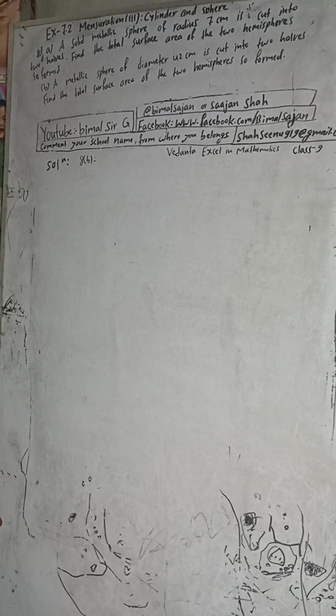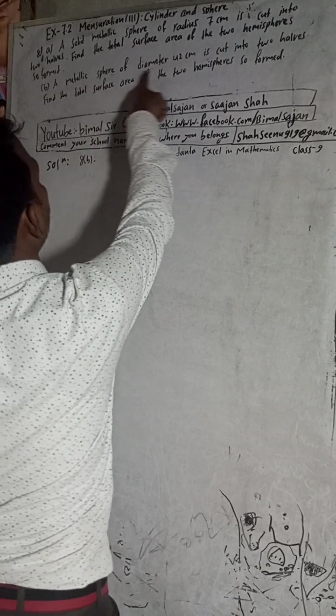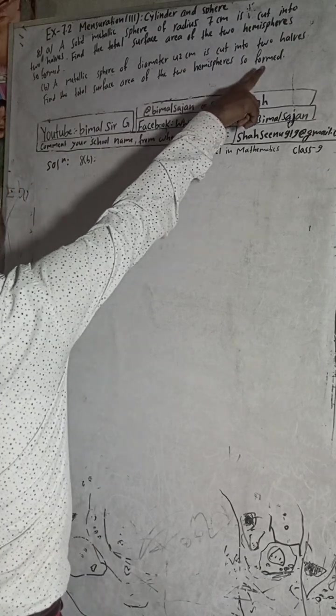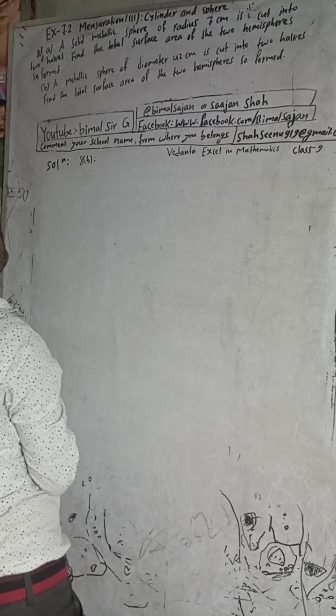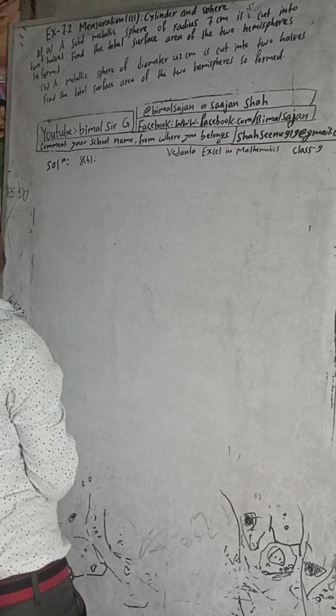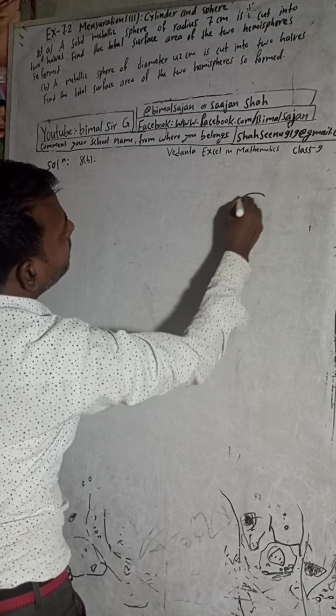Now I will start the solution. This is a metallic sphere of diameter 42 cm cut into two halves. Find the total surface area of the two hemispheres. So here, there is a metallic sphere.